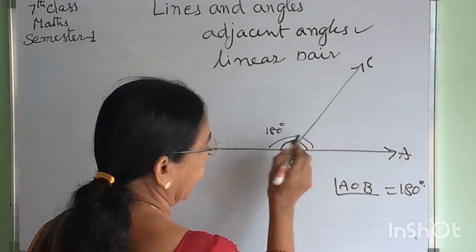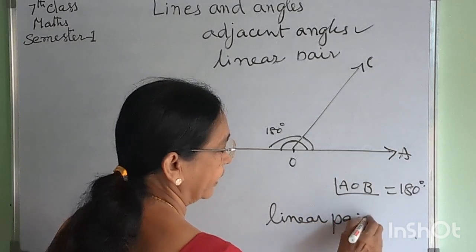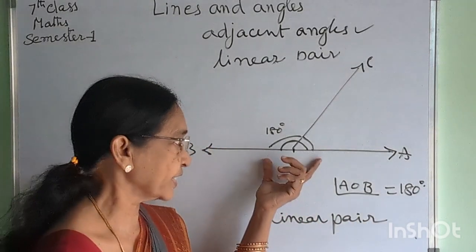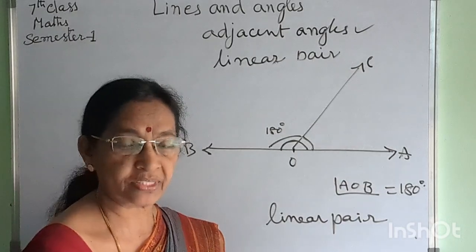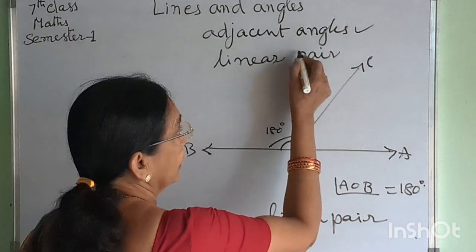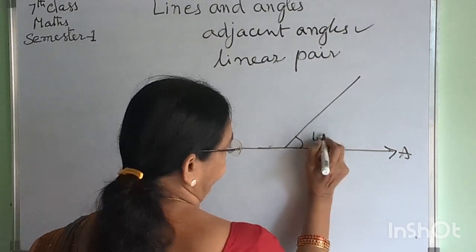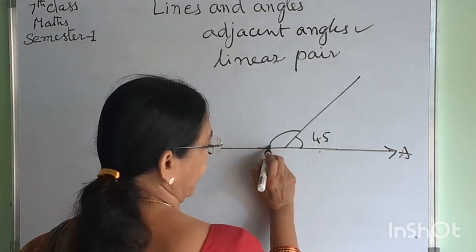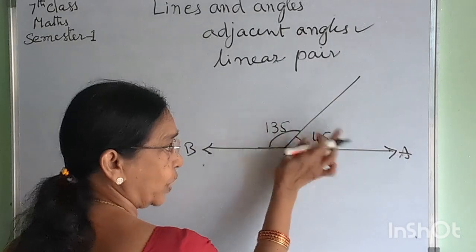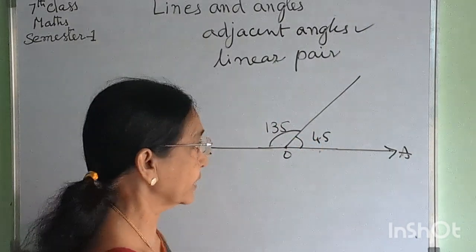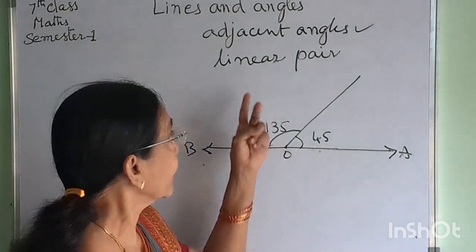These two angles are called a linear pair. A linear pair are two adjacent angles whose sum is equal to 180 degrees. For example, if one angle is 45 degrees, then the other is 180 minus 45 equals 135 degrees, because the total angle is 180 degrees. These two are adjacent angles and supplement to each other. So, two adjacent angles which are supplementary to each other are called a linear pair.